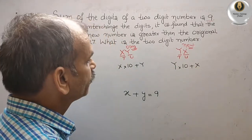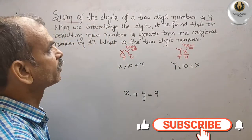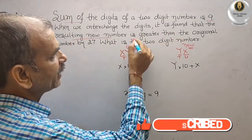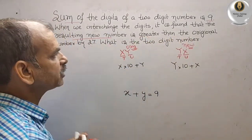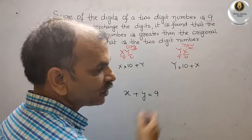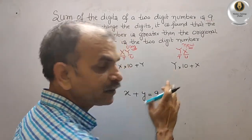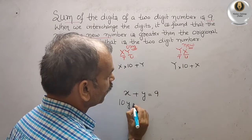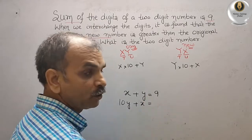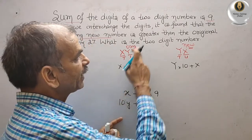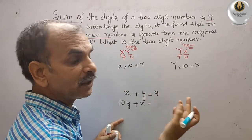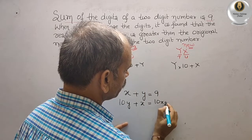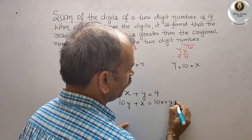The problem says the resulting new number is greater than the original number by 27. So: 10Y plus X equals 10X plus Y plus 27.